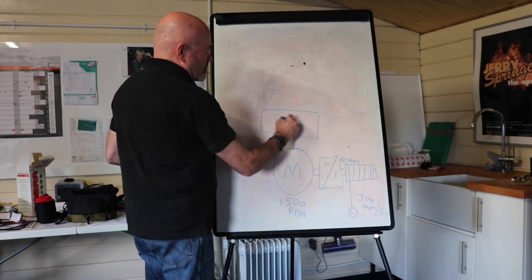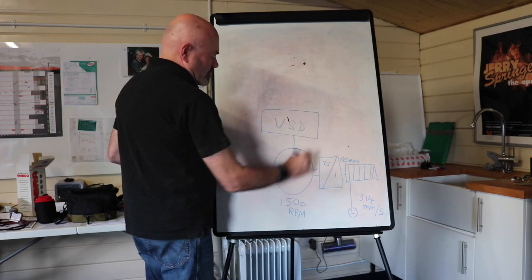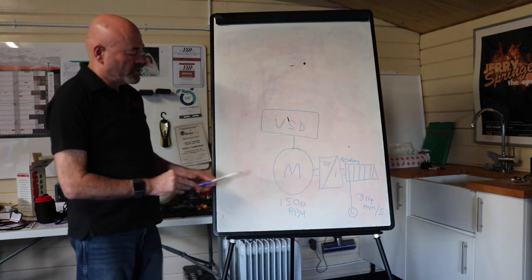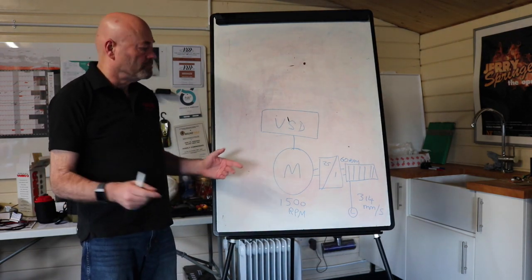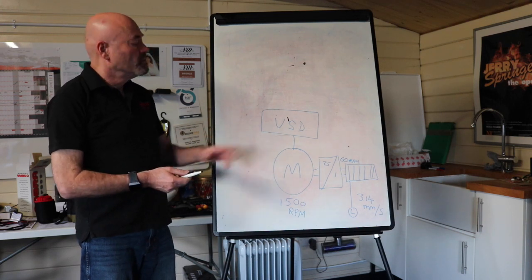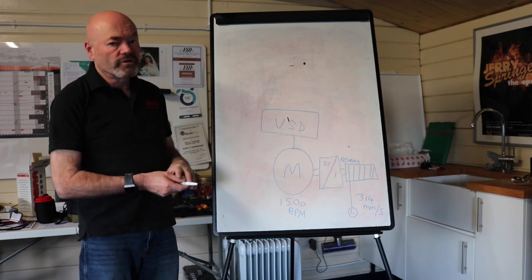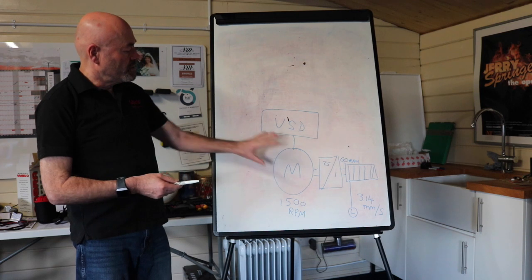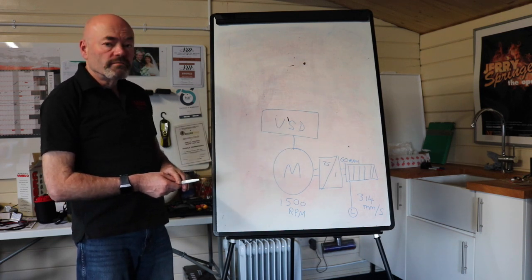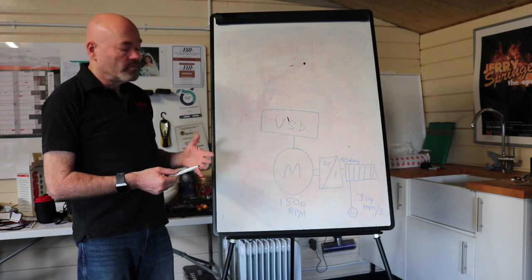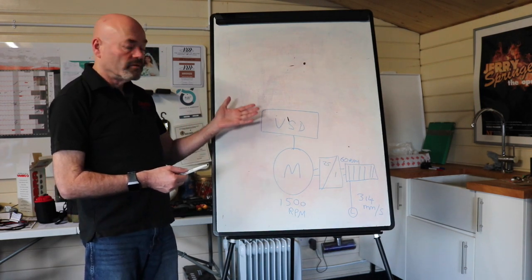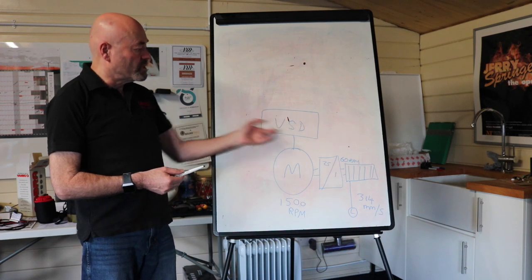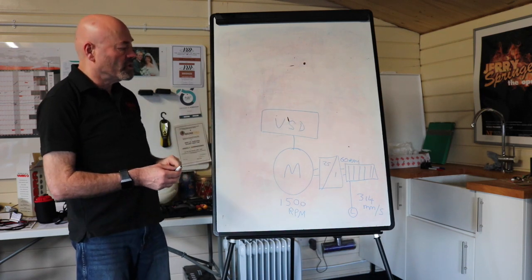But it won't always be travelling at 1500 rpm. We want it to travel between any speed between 0 and 1500 rpm. So we want it variable speed. So we need a VSD, a variable speed drive. In this example, it will be an AC motor inverter. For a servo motor it will be a servo drive, for a DC motor it will be a DC drive.